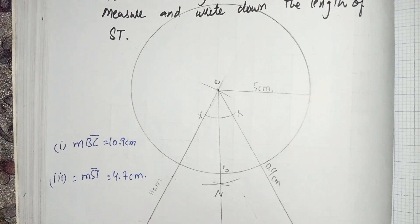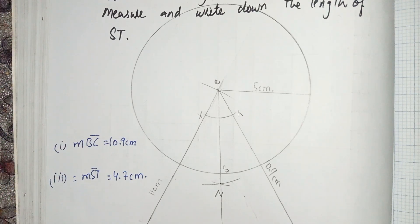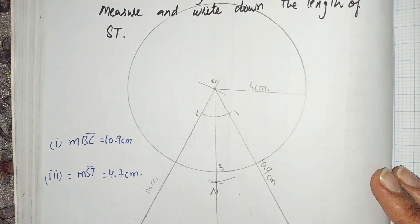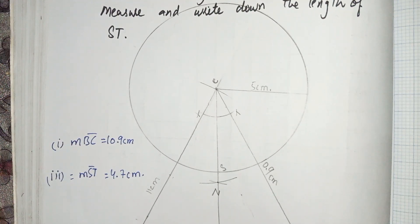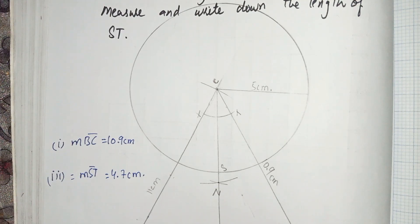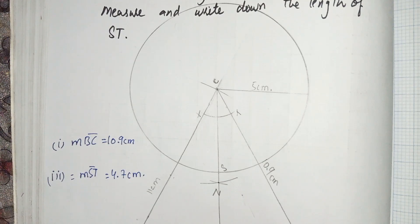When you have to write the points of construction, write exactly what you have performed in the question. If you understand this concept, you can write the construction steps very easily. I have written these construction steps in my previous videos of this chapter, and the link is in the description.